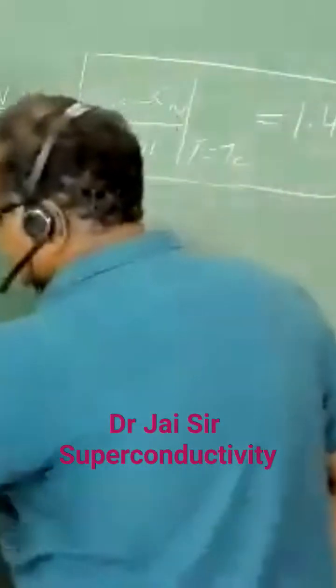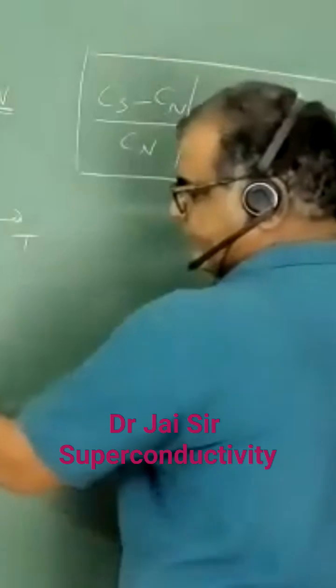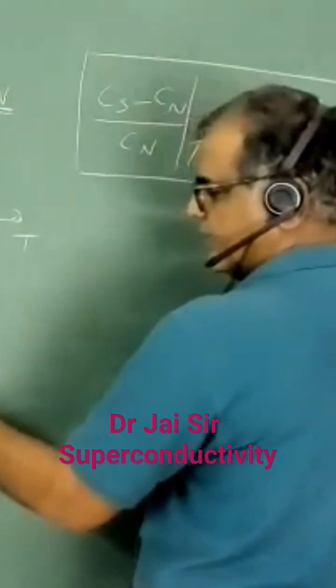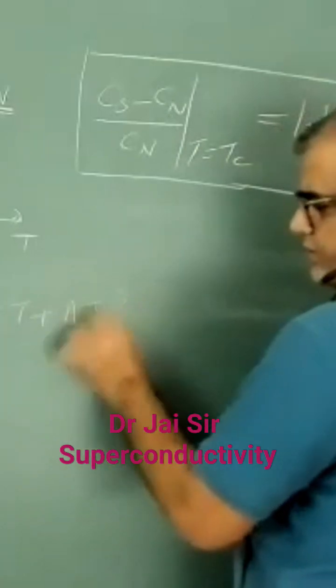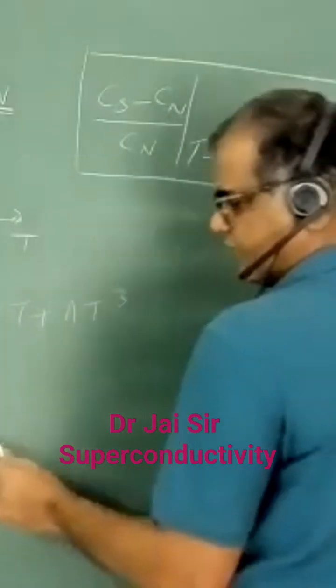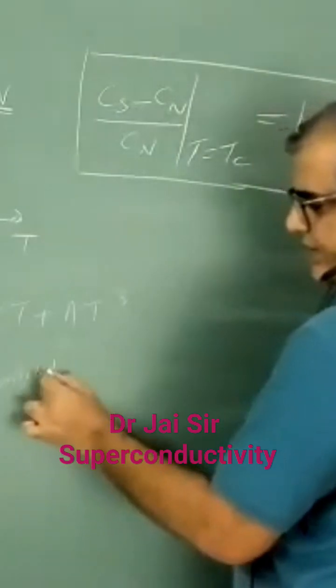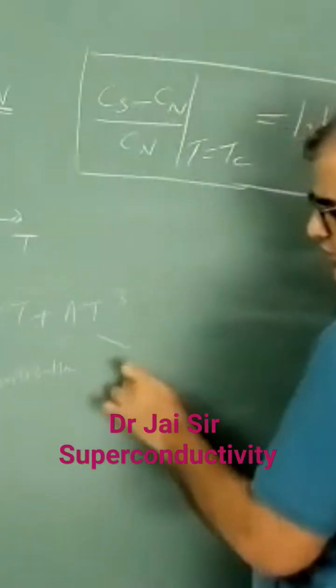Okay, if I write the specific heat of a metal, that is gamma T plus a T cube. This is the electronic contribution. The electron contribution to specific heat. And the a T cube is the phonon contribution.